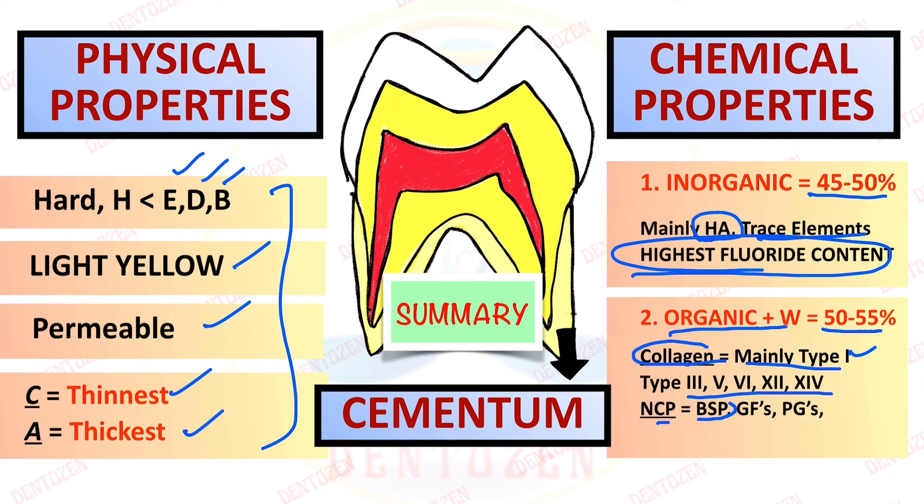And talking about the organic and water, they make 50 to 55%. Main organic component is collagen, mainly type 1. Lesser amounts of other collagens are there. Then non-collagenous proteins are quite similar to bone, bone sialoprotein and other proteins. Then growth factors, proteoglycans, and two important proteins, cementum attachment protein and cementum derived growth factor, as seen only in the cementum.